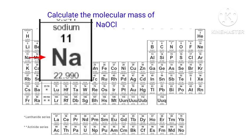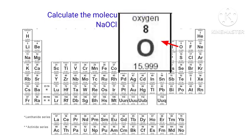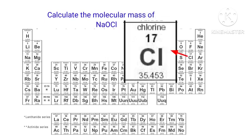The atomic mass of sodium is 22.990. The atomic mass of oxygen is 15.999. The atomic mass of chlorine is 35.453.